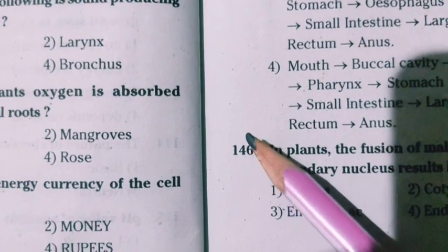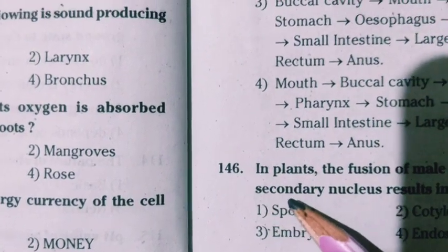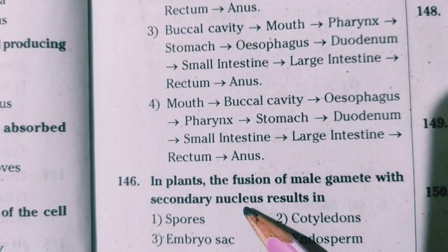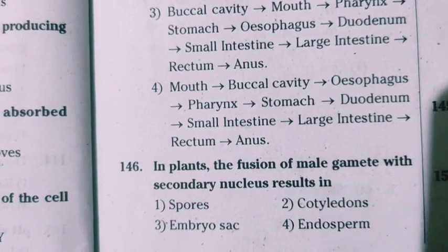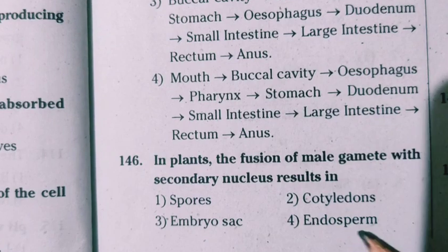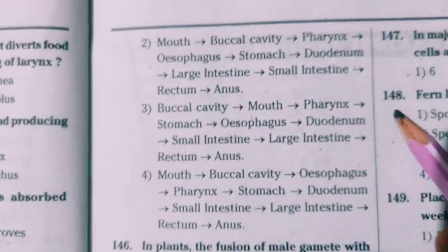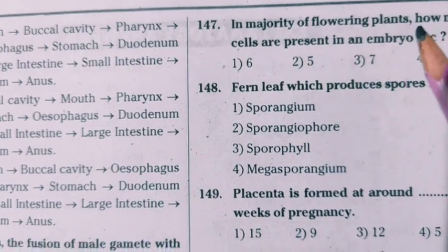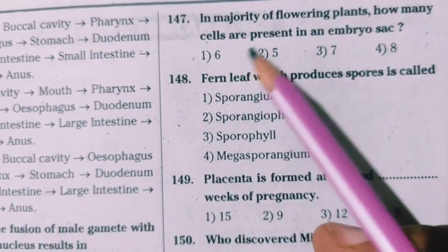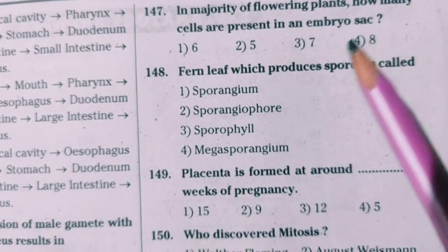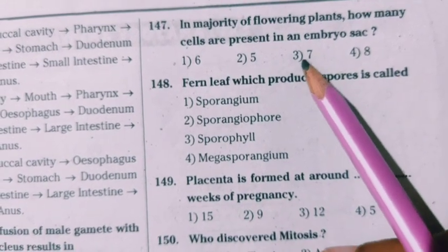In plants, the fusion of the male gamete with the secondary nucleus results in the endosperm. In the majority of flowering plants, how many cells are present in an embryo sac? It is seven cells. A fern leaf which produces spores is called a sporophyll.